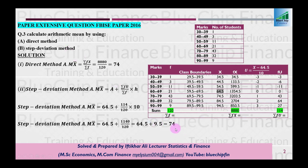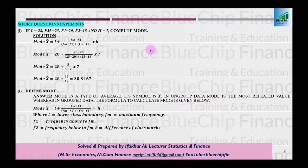Ab short questions. Pehle question mein data diya gaya hai: l = 28, fm = 25, f1 = 20, f2 = 18, aur h = 7. Compute mode. Hum mode ke formula mein yeh tamam data put karenge aur solve karenge to mode = 30.9167 aa jayega.